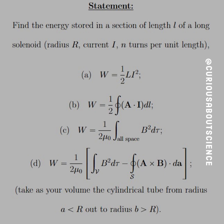Method A, where energy is equal to one-half LI squared, pretty nice, pretty easy. Or method B, where we have the energy is equal to one-half times the line integral of A dot I, the current, where A is the vector potential.